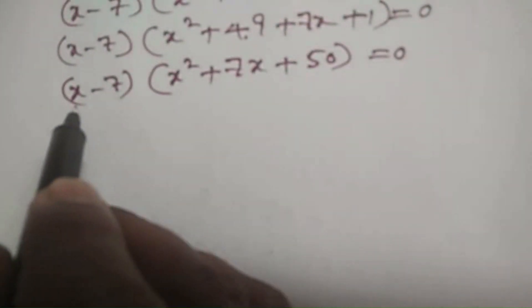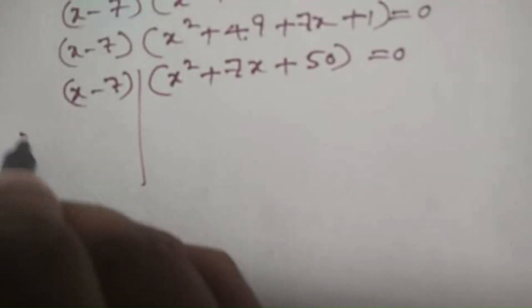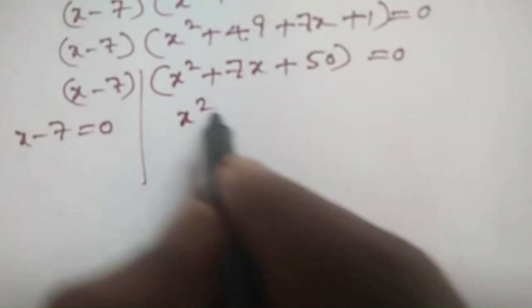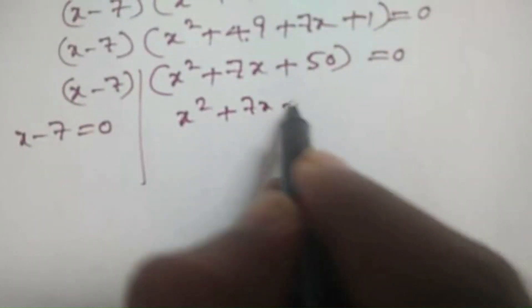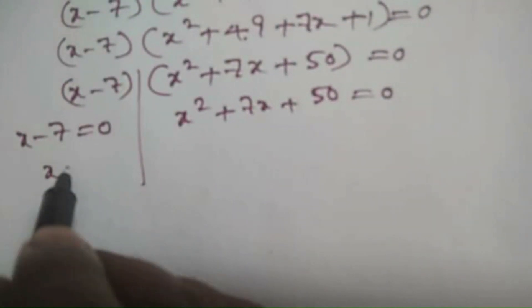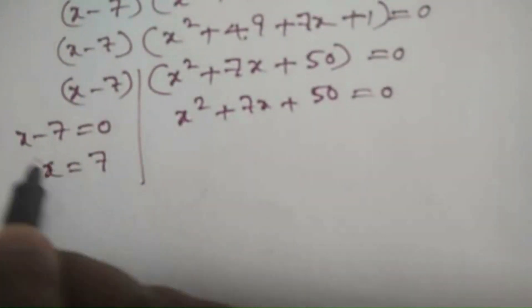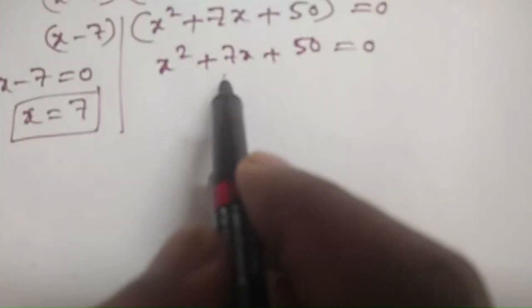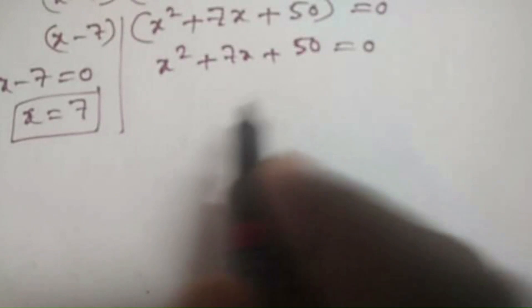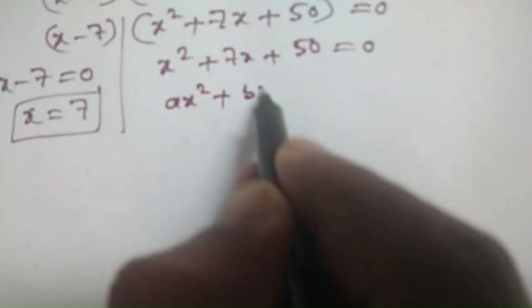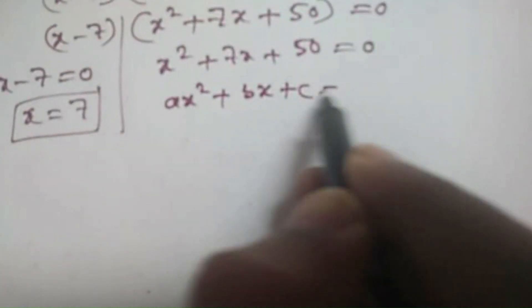From this we can write that x minus 7 is equal to 0, which gives x equal to 7, and x squared plus 7x plus 50 is equal to 0.